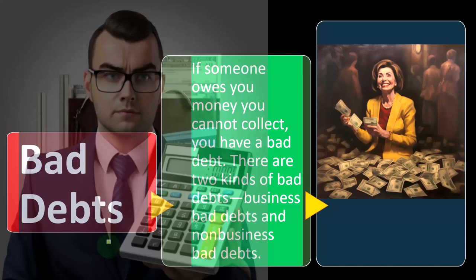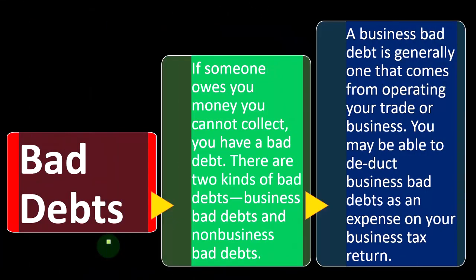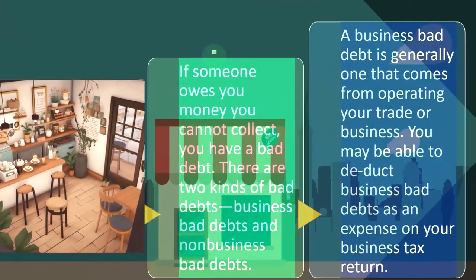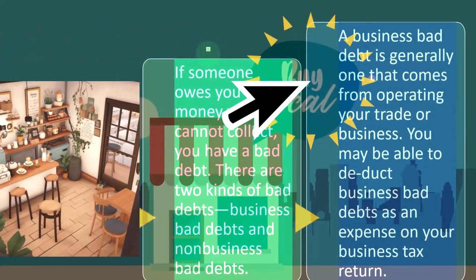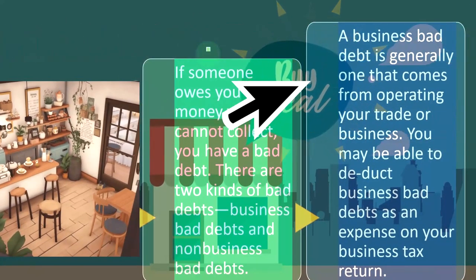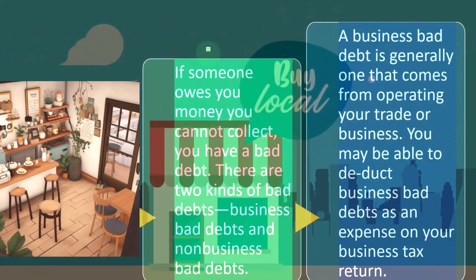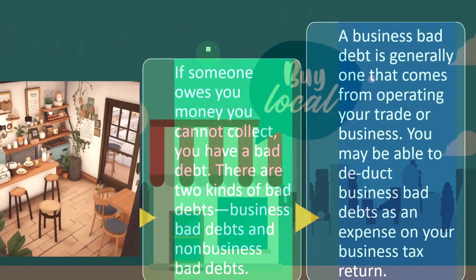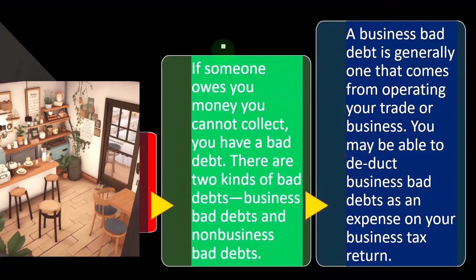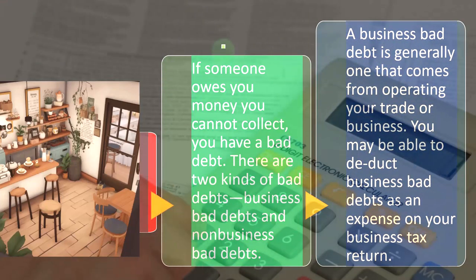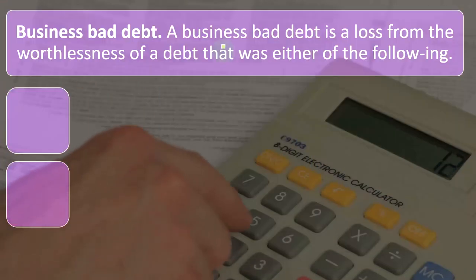There are two kinds of bad debts: business bad debt and non-business bad debt. Business bad debt is generally one that comes from operating your trade or business — that's the one that might have something to do with the Schedule C. You may be able to deduct business bad debts as an expense on your business tax return.